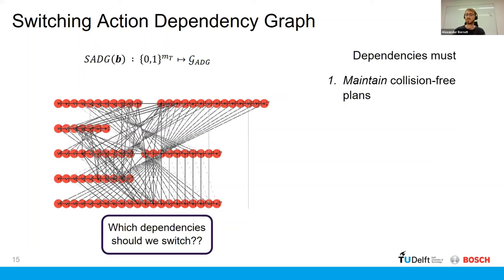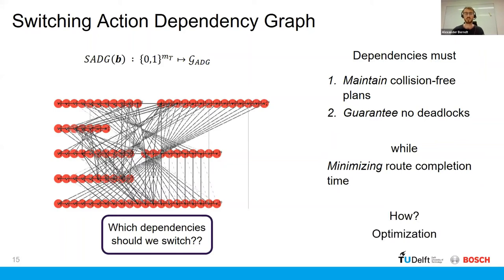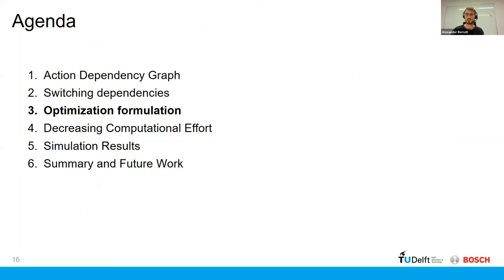And we need to keep in mind that these dependencies must maintain the collision-free guarantees of the plan, but they must also not result in plans that result in a deadlock for the AGVs. And then we also would like to minimize some route completion time of the AGVs. And the way that we tackled this was through an optimization formulation, which is what I'll be presenting now.